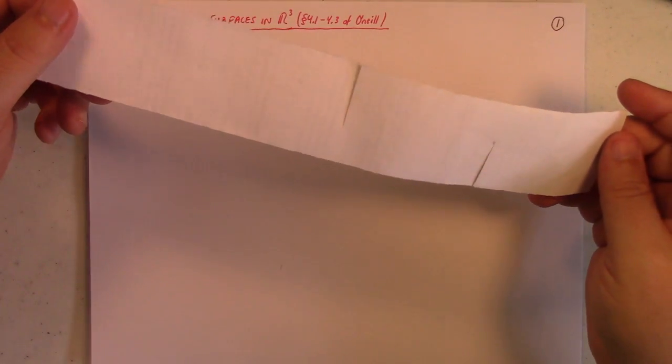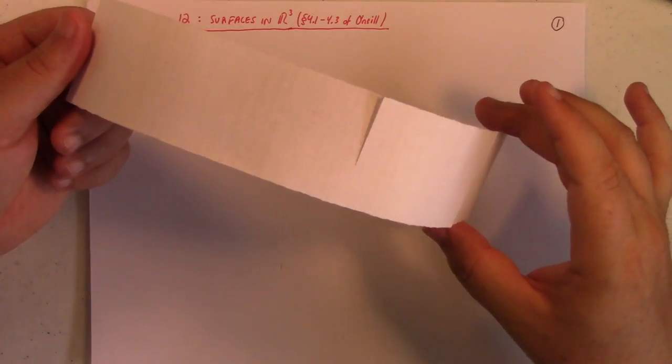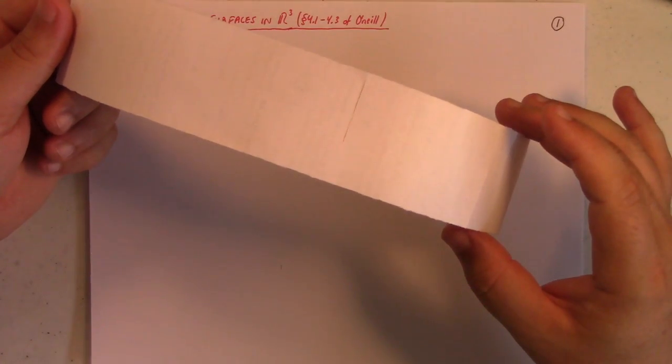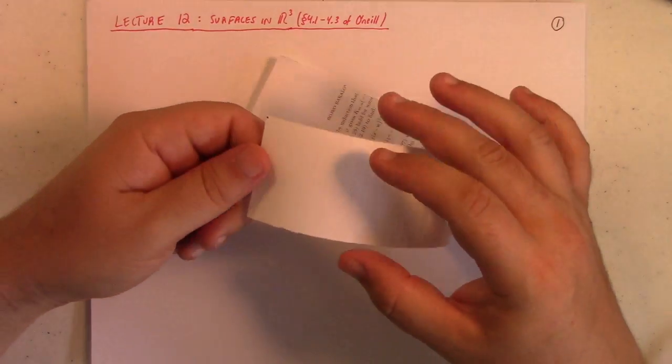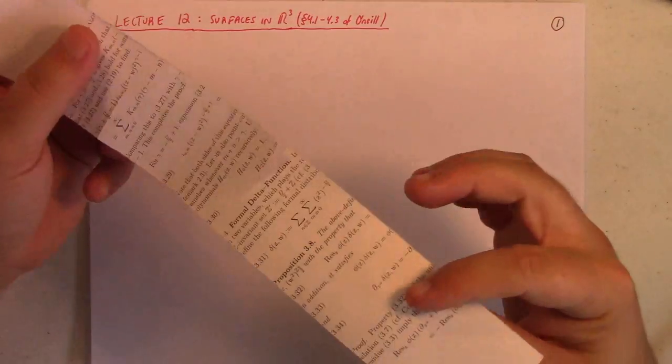Now, the surfaces we want to talk about today don't really have edges, so you should think of this as a fuzzy edge. And those cuts, ignore the cuts for the moment. Imagine they're not there. But that's a surface. Of course, you could take it and bend it.